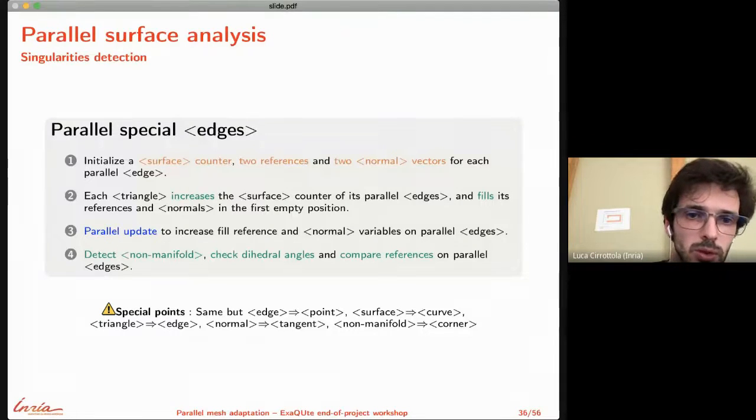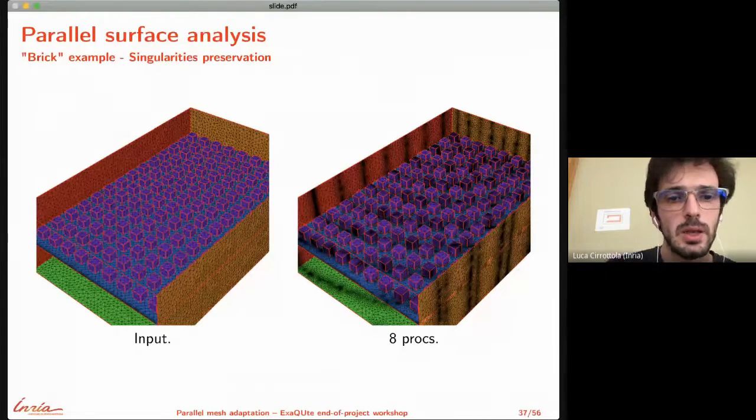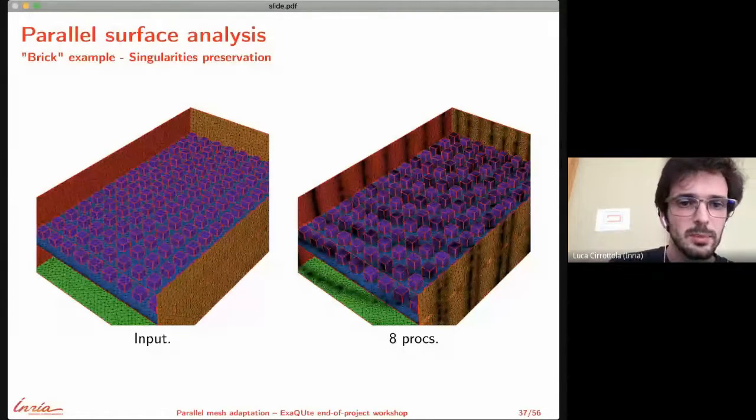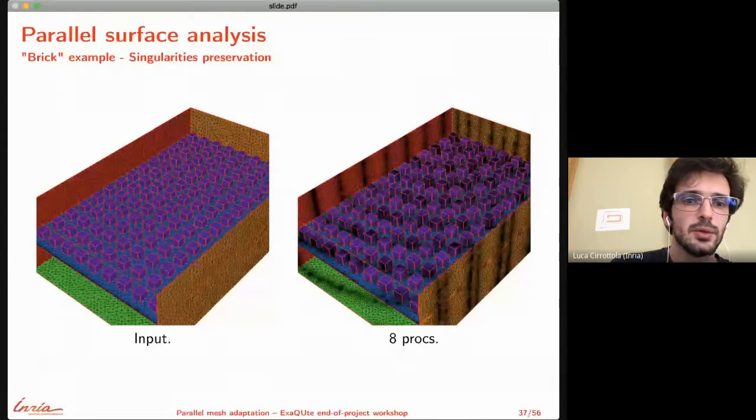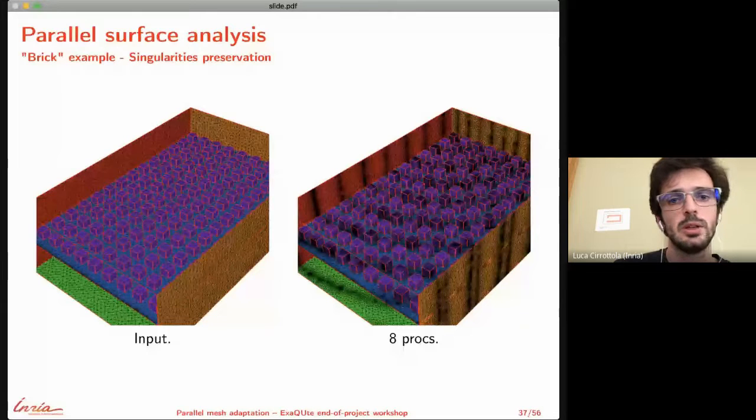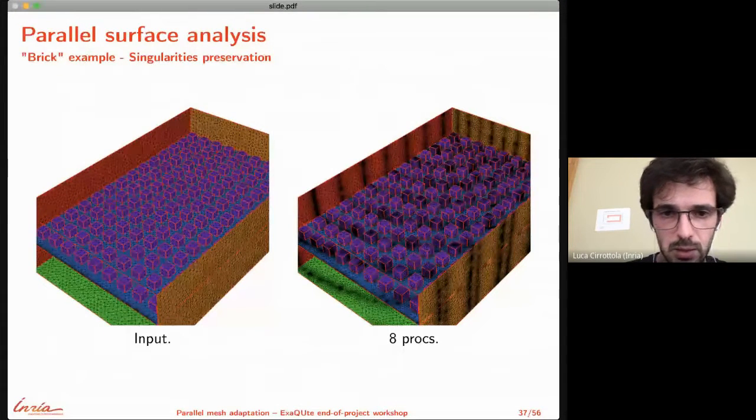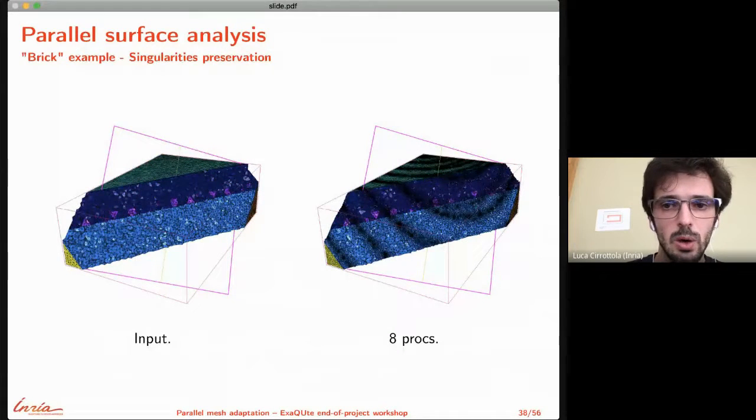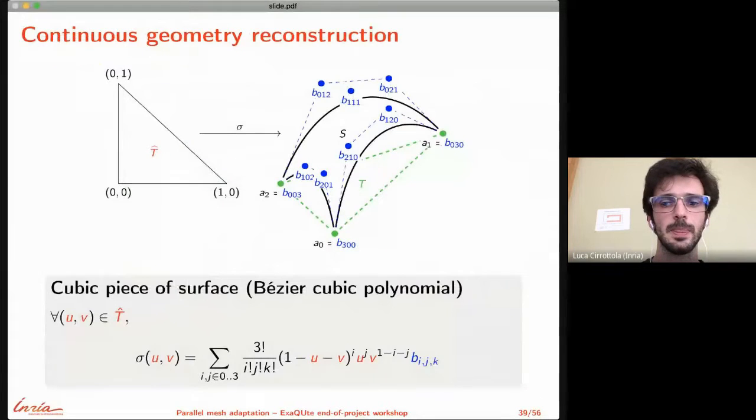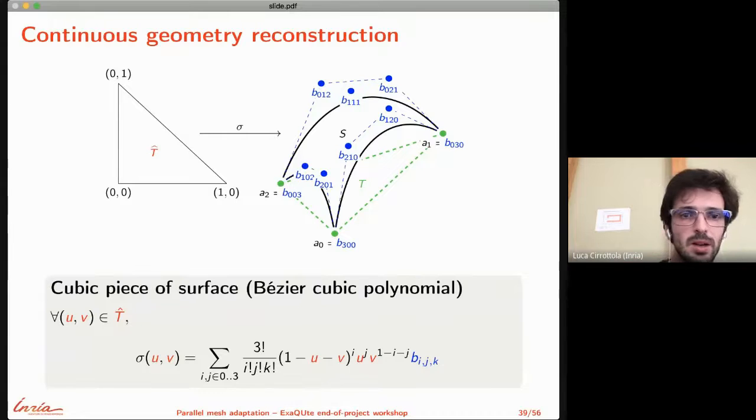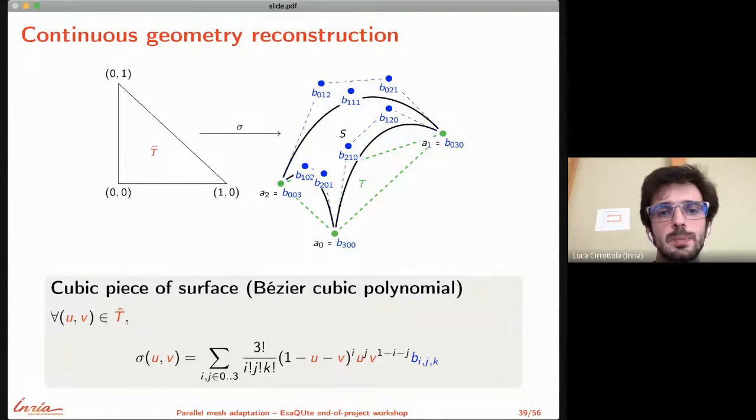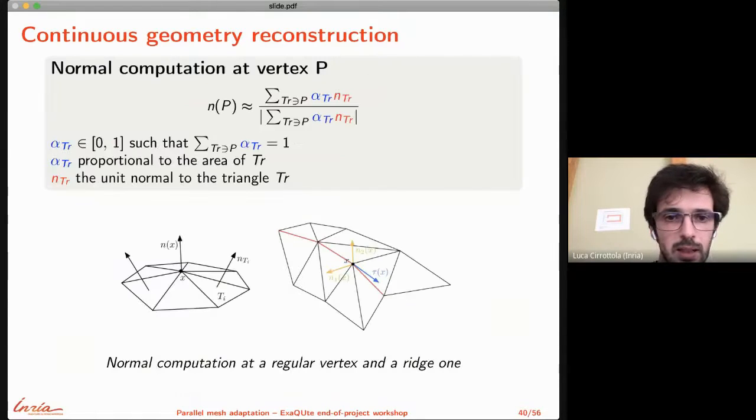Basically, the surface analysis has been implemented so it can reuse the sequential analysis on the partition interior, skip all parallel surfaces in the sequential remesher. This part required work from the sequential part too, then ParMmg per se handles the analysis only on the parallel interfaces. I'll skip the algorithm details and give you some examples - a small example from one to eight processes of a surface with many bricks embedded in a volume mesh.